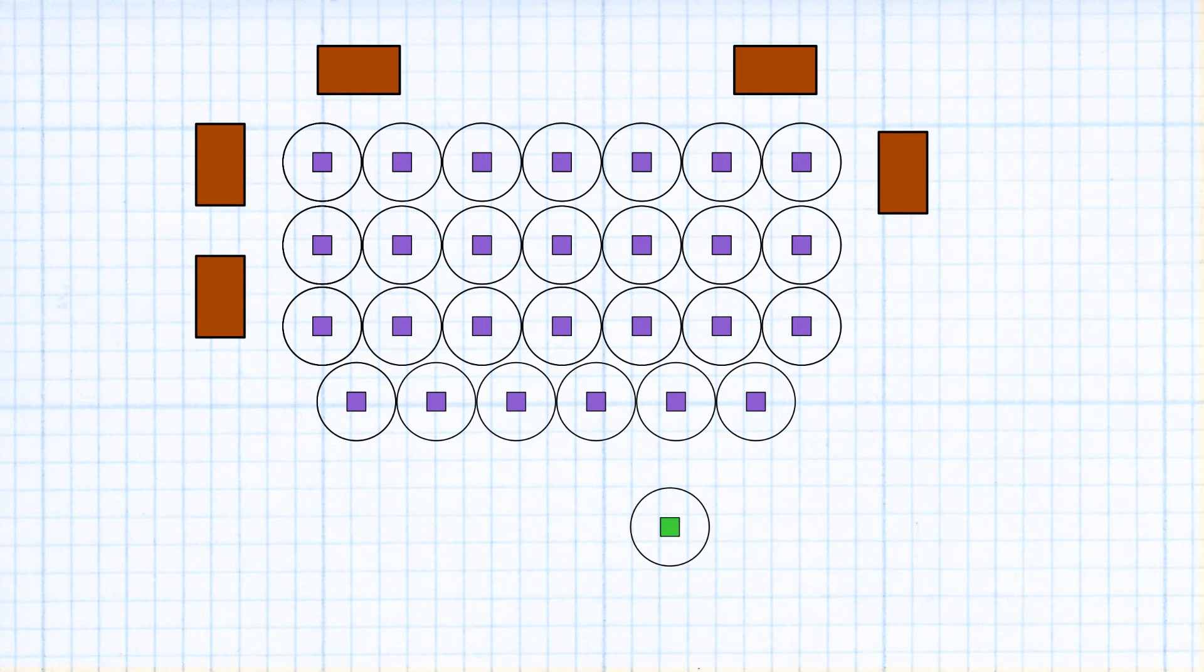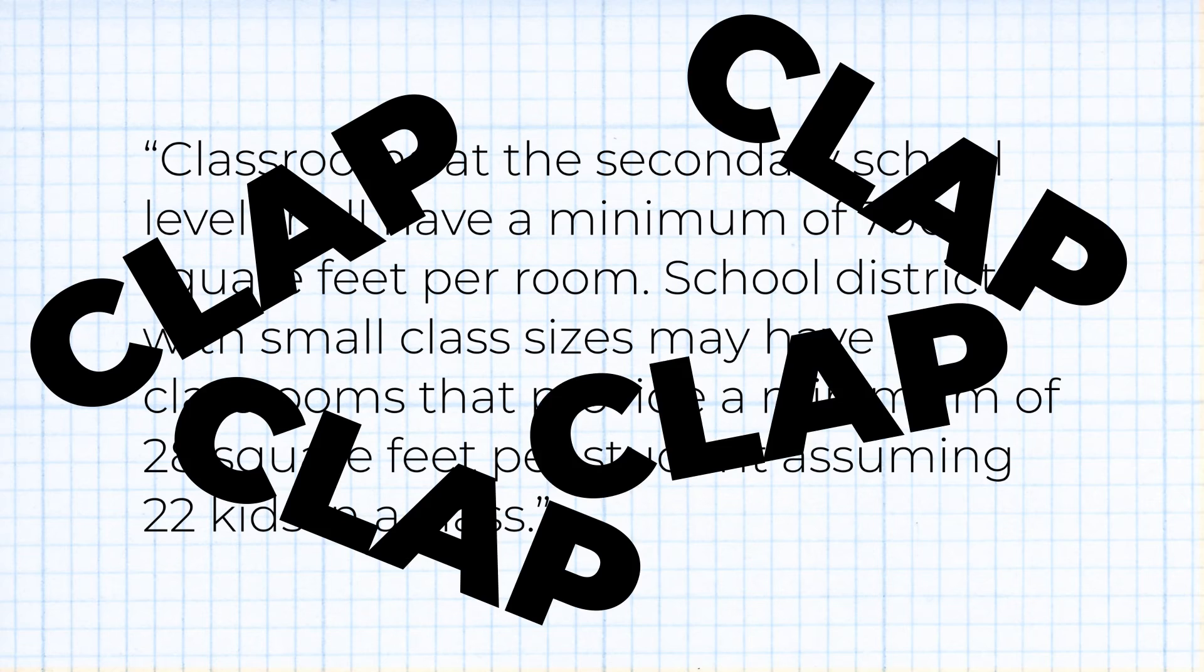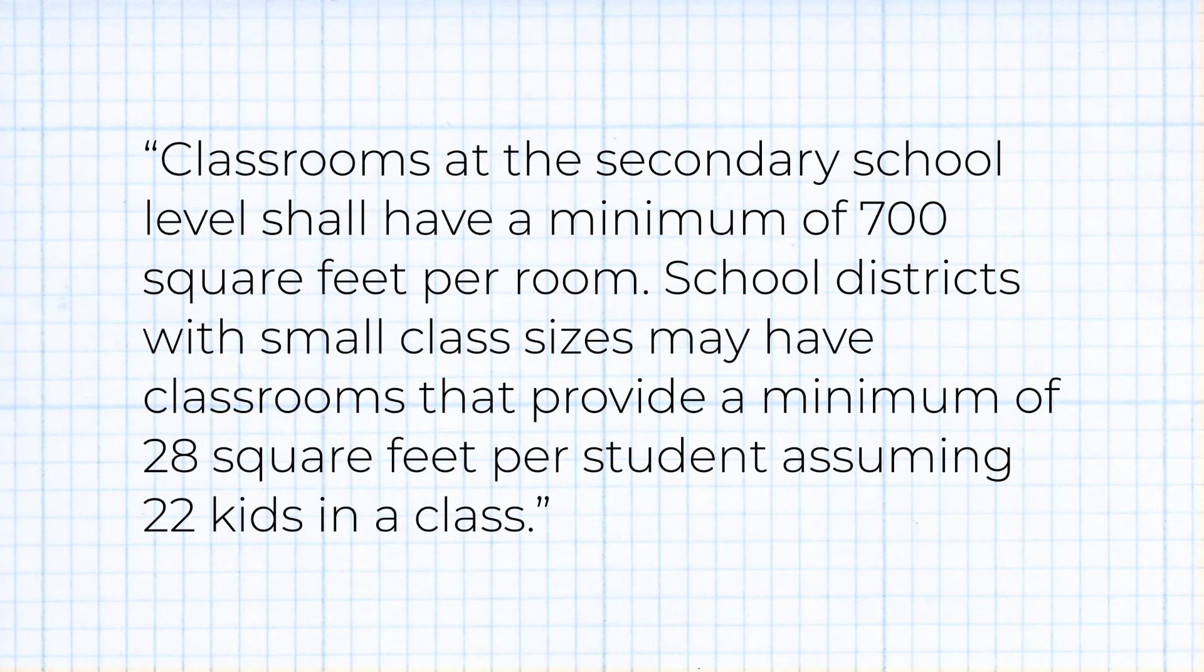But a class isn't just students and desks. We have cabinets, and a teacher, and their desk, and probably some computers, and some space to walk on the edges, and making sure the teacher is 6 feet away as well. Texas law says we need to have a minimum of 700 square feet, but there's no way we can get all of the students in there.